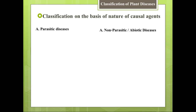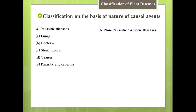Ab hum dekhte hain ki parasitic diseases koun si hoti hain. Parasitic diseases mein aata hai fungi — jo diseases fungi ki waja se hon unko fungal diseases kehte hain — bacterial diseases, slime moulds se jo bimari hoti hai, viruses se jo bimari hoti hai, parasitic angiosperms jo bimari ka baais bante hain, kuch algae jaise Cephaleuros bhi bimari ka baais banta hai, kuch insects bimari ka baais bante hain, mites bhi isme shamil hain, aur nematodes. These are all the things that cause parasitic diseases.